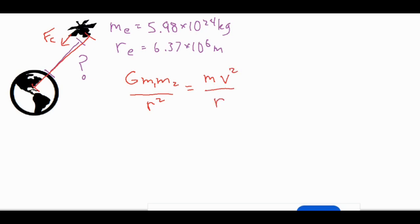From there we can do a couple things. We can go ahead and cancel one of the m's. The m that we're canceling is the mass of the actual satellite itself because that's the thing that's going in the circular path.